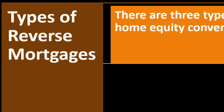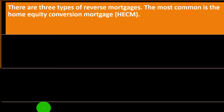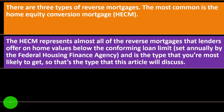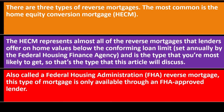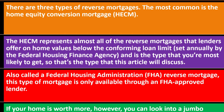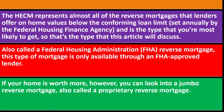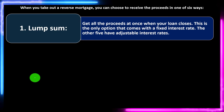Types of reverse mortgages: there are three types. The most common is the Home Equity Conversion Mortgage, or HECM. The HECM represents almost all the reverse mortgages that lenders offer on home values below the conforming loan limit set annually by the Federal Housing Finance Agency. Also called an FHA reverse mortgage, this type is only available through an FHA-approved lender. If your home is worth more, you can look into a jumbo reverse mortgage, also called a proprietary reverse mortgage.